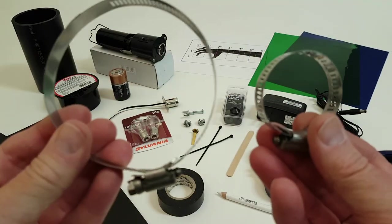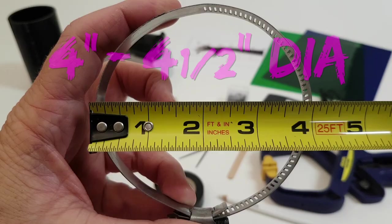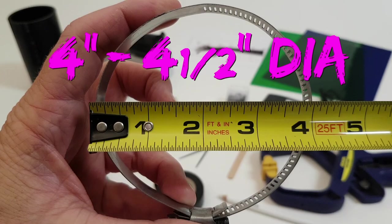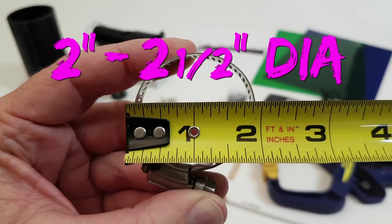Two hose clamps, sometimes called ring clamps. One large, between four and four and one half inches in diameter, and one small, between two and two and one half inches in diameter.